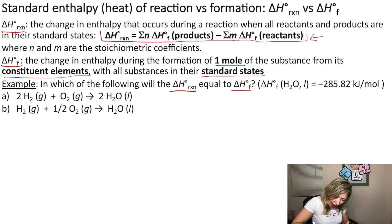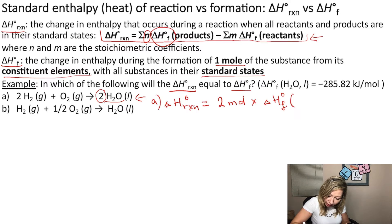So for reaction A, if I want to calculate the ΔH of the reaction under standard conditions, I will need to look first at the products. I have only one product, which is water, and I have two moles of it. So I need to take that stoichiometric coefficient into account: two moles multiplied by the heat of formation of the product, ΔH°f of H2O liquid.